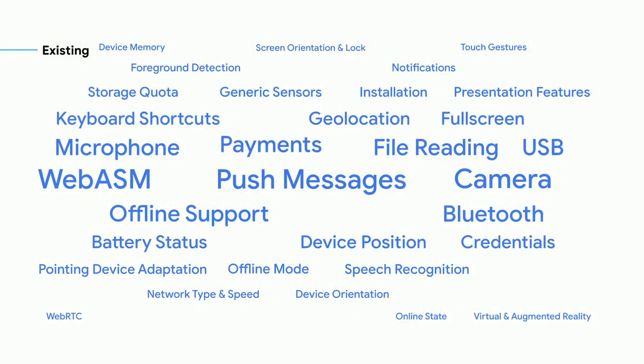I was talking to some folks around I/O this week, and some of them were really surprised to learn that the web could already do a lot of these things — access camera and microphone APIs, use USB and Bluetooth devices, or run cross-compiled performance-critical code in WebAssembly. We've come such a long way in the last decade. But we're not stopping here. We know we've got a lot of work to do to continue to expand the capabilities of the web and further improve our OS integration. I'm super excited to share some of our upcoming roadmap, all of which is being developed out in the open in close collaboration with partners, developers, and other browsers.